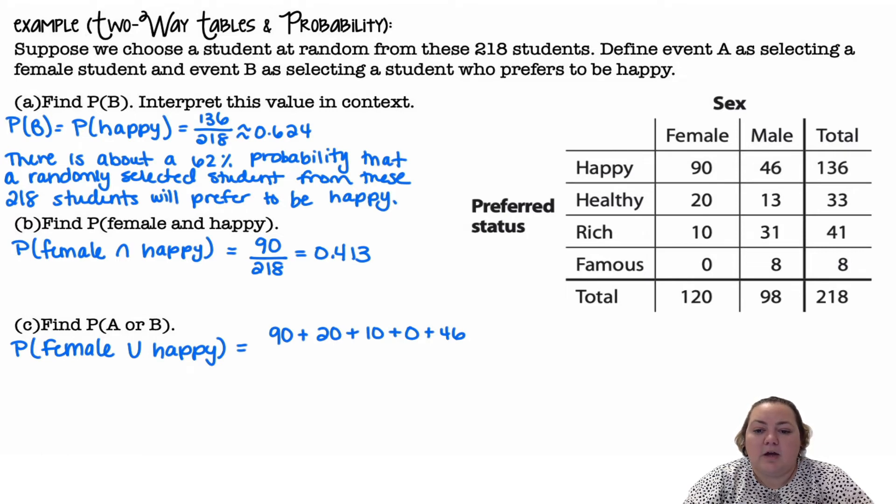and then the other happy would be male and happy is 46 out of 218, which works out to be 166 out of 218, or 76.1%, 0.761.